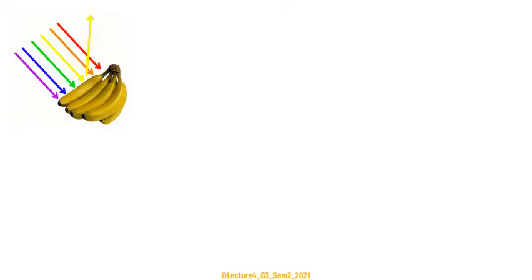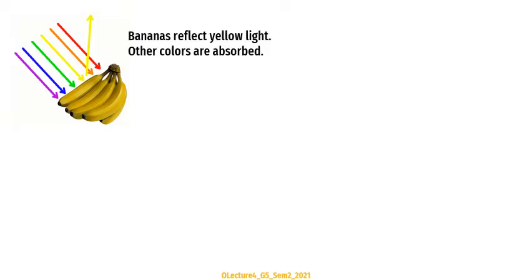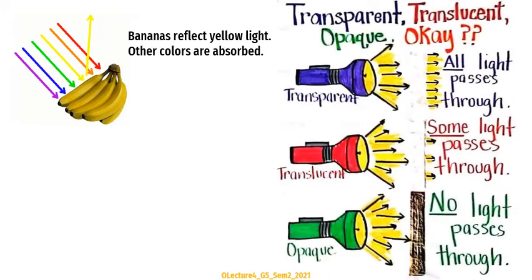Light helps us see. How do we see objects around us? It's because these objects reflect light. Take, for example, these bananas. Bananas are yellow. We see bananas as yellow because they absorb all the colors of the visible spectrum, but they reflect the yellow light to our eyes.